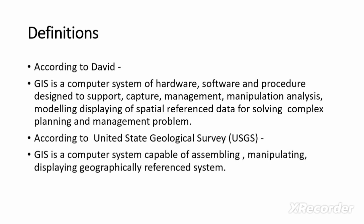So GIS is a kind of computer system with hardware, software, and procedures designed to support and capture data, manage data, manipulate, modify, model, and display spatially referenced data — data assigned a location such as latitude or longitude — for solving complex planning and management problems.